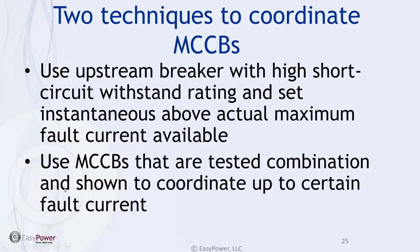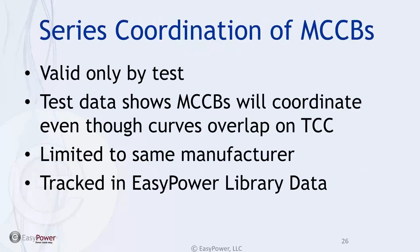Based on fault current, there is potential for coordination up to a certain point. Looking at TCC curves for two devices, a fault to the left of the overlap guarantees coordination because the downstream breaker will trip first. The problem exists when we're in an area of uncertainty in the overlap region. MCCB manufacturers are testing for series coordination, where guaranteed coordination based on testing can validate certain combinations.